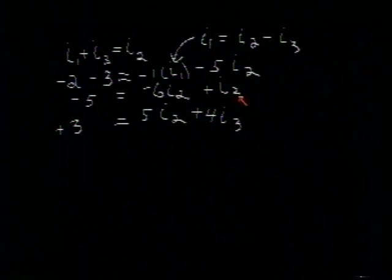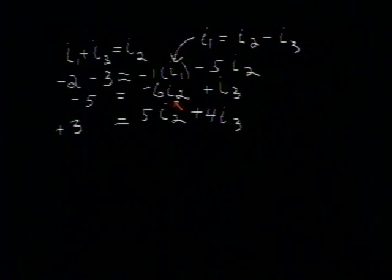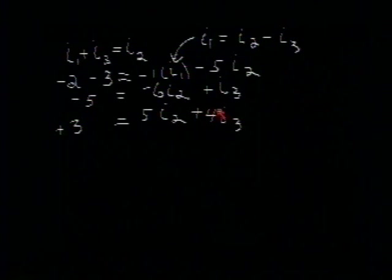Now if we examine these two equations, we find that these two equations contain only the variable I2 and I3. So we're now down to two equations with two unknowns.